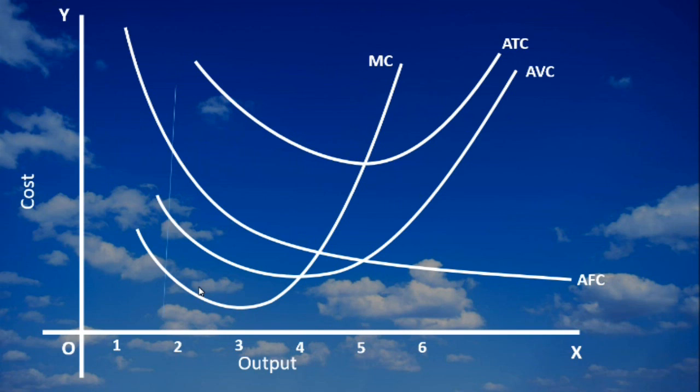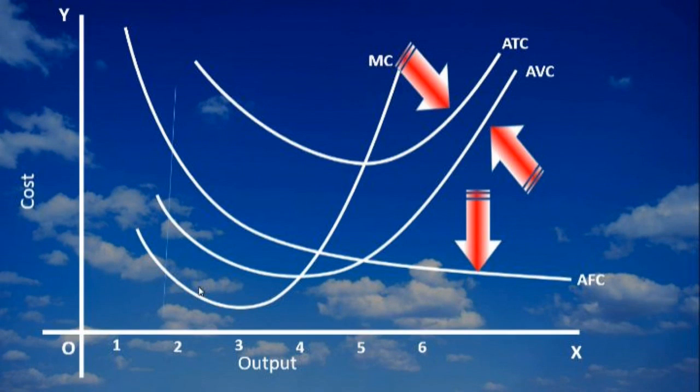Third relation. To the right of the minimum point of average total cost, it increases. This is because Average variable cost is increasing. Again, rate of rise of average variable cost is greater than the rate of fall of average fixed cost.